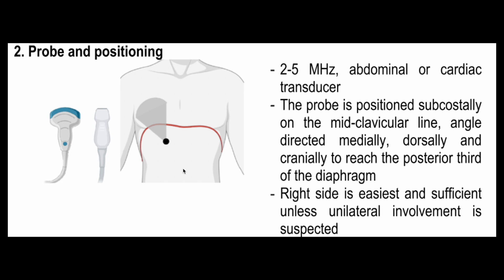Use the abdominal or cardiac probe at 2 to 5 MHz. The probe is positioned subcostally on the mid-clavicular line — below the ribs is the subcostal area. The angle is directed medially, dorsally, and cranially to reach the posterior third of the diaphragm. The right side is preferred since the liver provides a very good acoustic window.